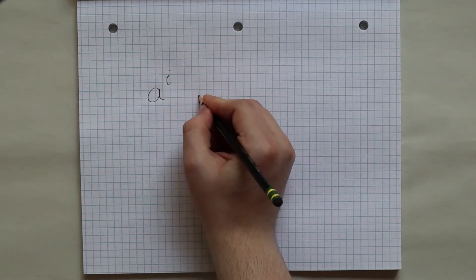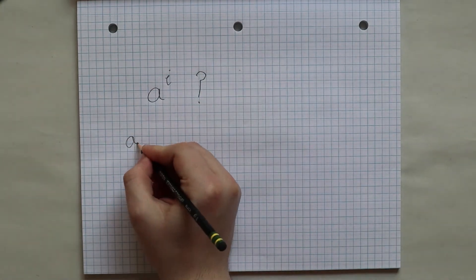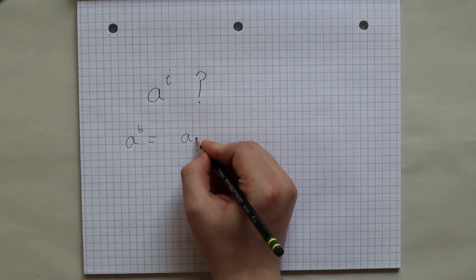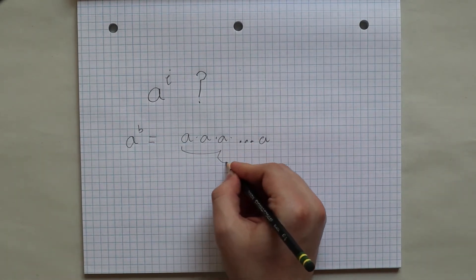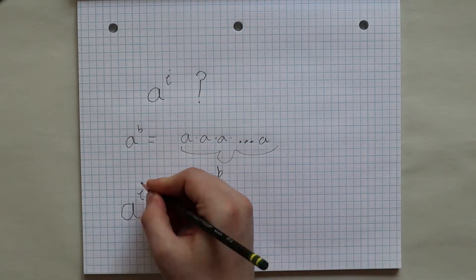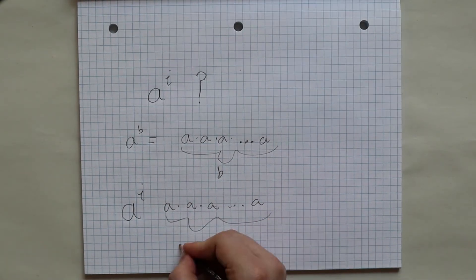What does it mean to raise a number to the ith power? It may seem like an odd question to ask. Isn't it when you raise a number a to another number b, meaning to multiply that number a b many times? But multiplying some number i many times doesn't really make any sense.